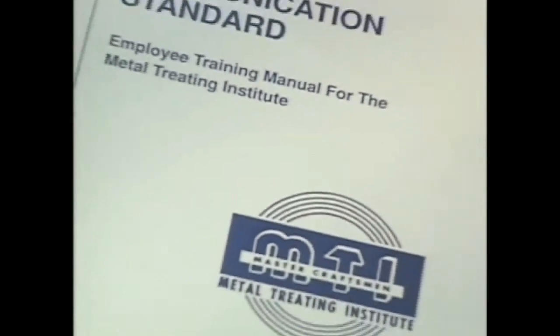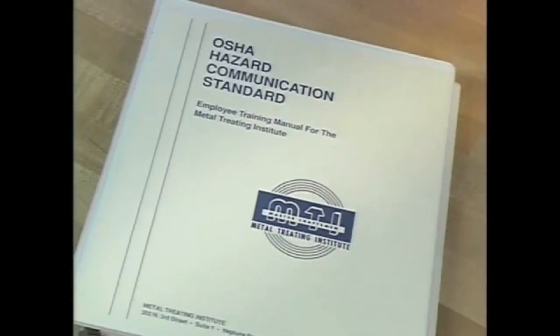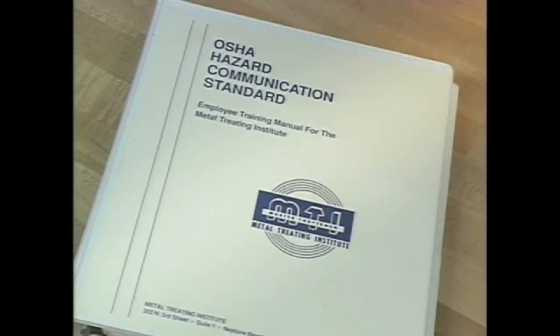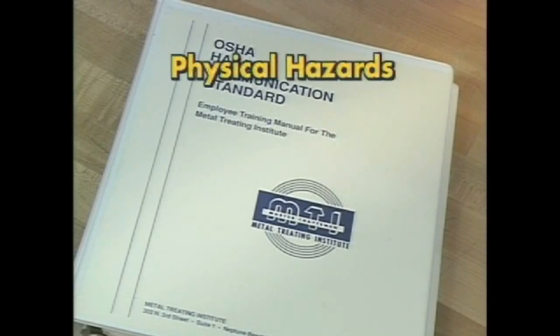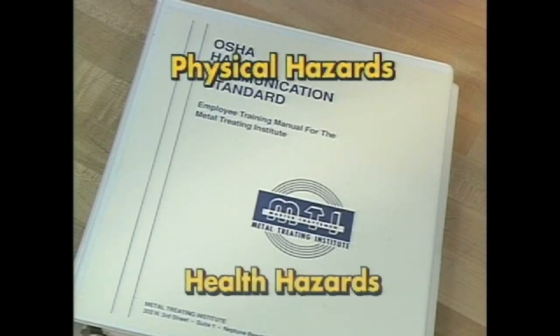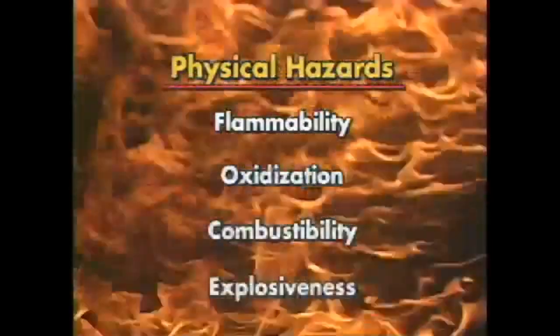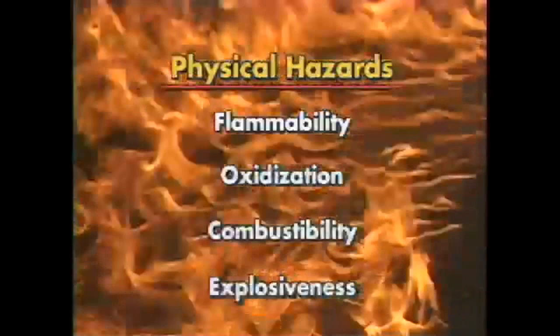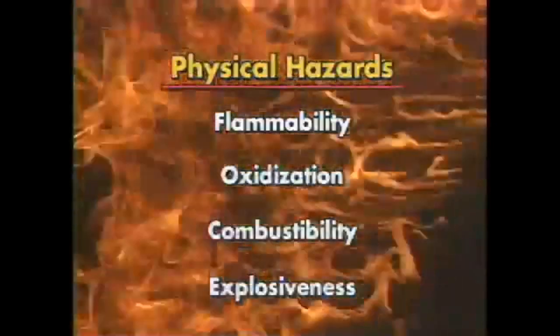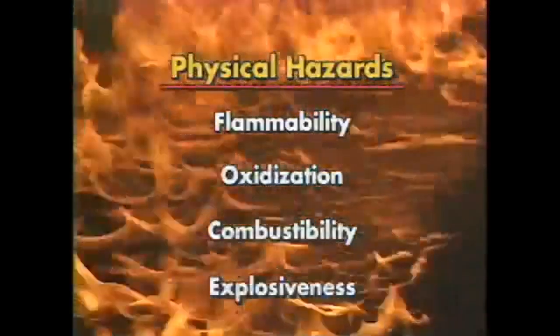According to OSHA's Hazard Communication Standard, a hazardous chemical is defined as any material which poses either a physical or a health hazard. Physical hazards get their name from their hazardous physical characteristics, such as flammability, oxidization, combustibility, and explosiveness. These are all attributes which are measurable under laboratory conditions.